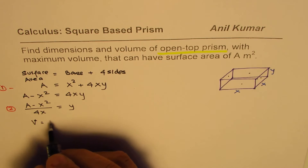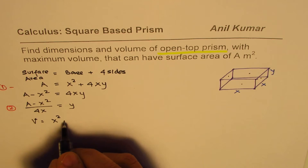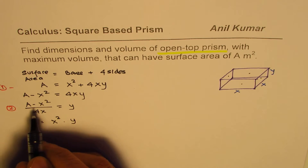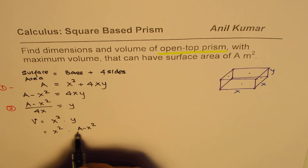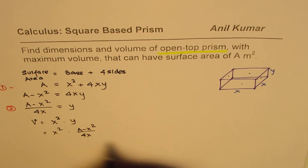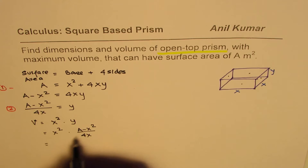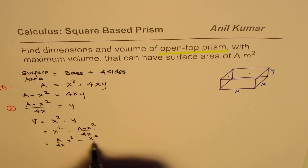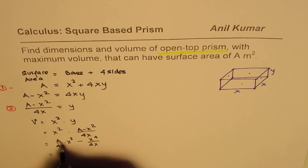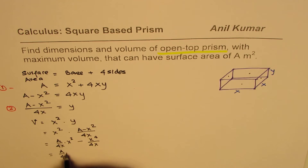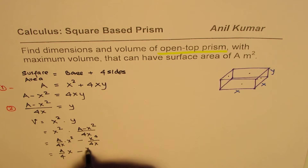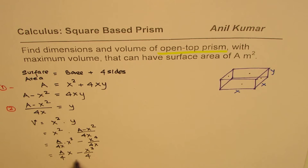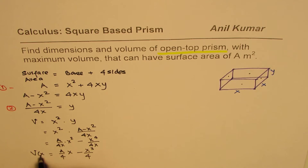The volume equals base area times height, which is X² times Y. Substituting equation 2 for Y, we get V = X² × (A − X²) / (4X). Rearranging: V = (A/4X)·X² − X⁴/(4X), which simplifies to V = (A/4)·X − X³/4. This is equation 3, relating volume to the single variable X.